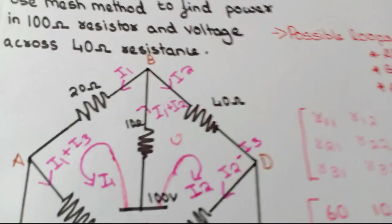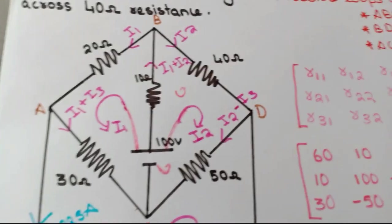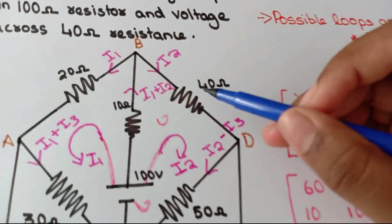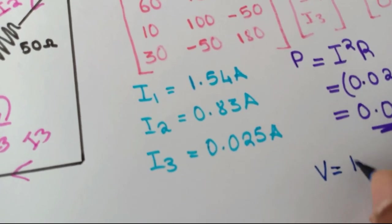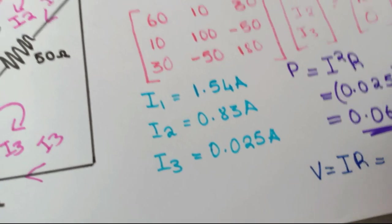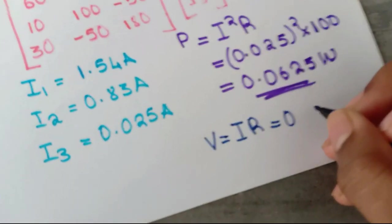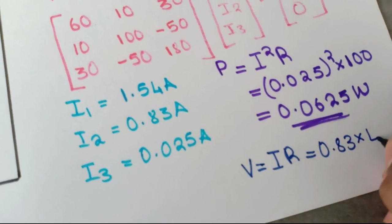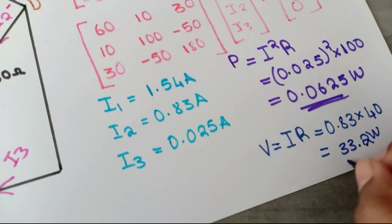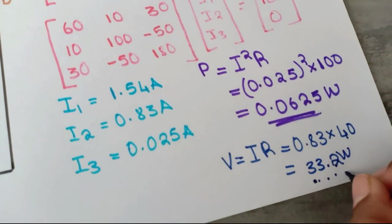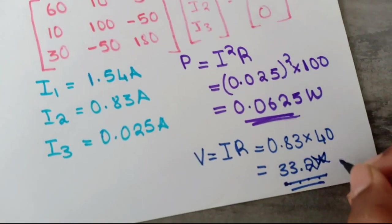The second part of the question asks for the voltage across the 40 ohm resistance. Using V = IR, the current through the 40 ohm resistor is I2 = 0.83 A. So V = 0.83 × 40 = 33.2 volts. Remember to include units: watts for power and volts for voltage.